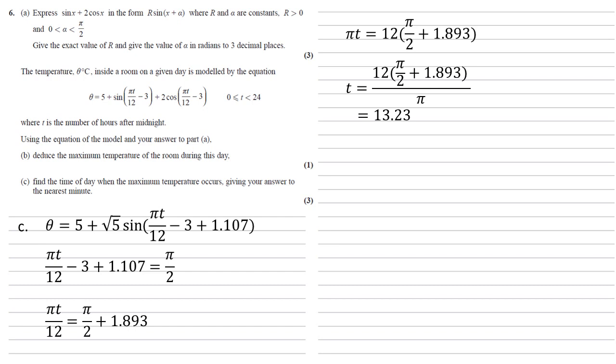But we need the time of day to the nearest minute, whilst ours is still in decimal form. To convert this, we're going to take the decimal bit, the 0.23, times that by 60, the number of minutes in an hour, which gives us 14 minutes to the nearest minute. So the time of day is 13:14 or 1:14 pm, whichever format you prefer.